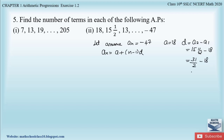Taking the LCM of 2: d = (31 − 36) / 2 = −5/2. So the common difference d equals −5/2.